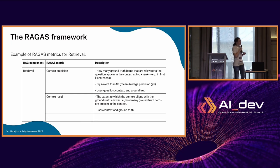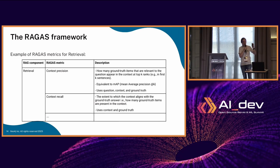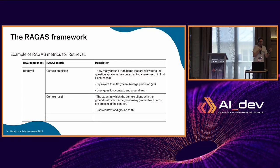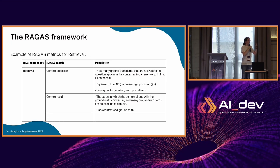RAGAS contains quite a few metrics. Some are related to measuring how good the retrieval is. You have your question and you retrieve some context — are those retrieved items relevant to the user question? You have the concept of context precision and recall, to measure if the relevant items are there and if all the relevant items are there.